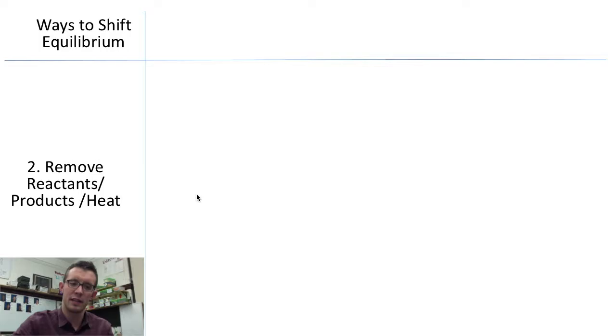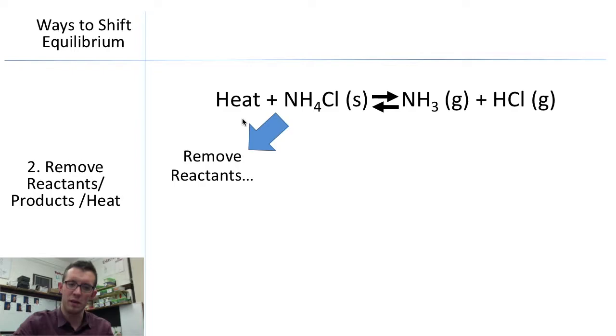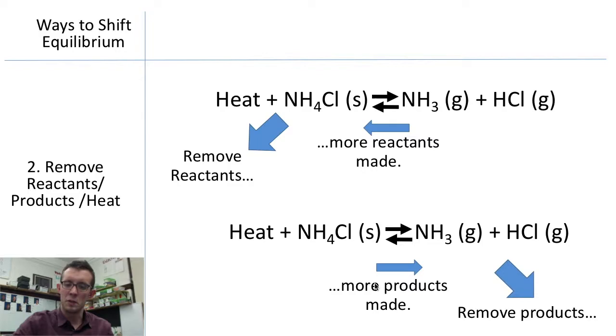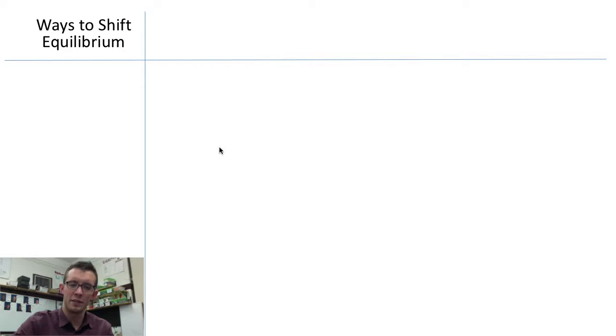You can also shift the reaction by removing reactants, products, or heat. So in our same example here, if we were to remove some of our reactants, that would shift our reaction back toward the reactants. Or vice versa, if we were to remove some of our products, it would result in more products being made to replace the ones that were lost.